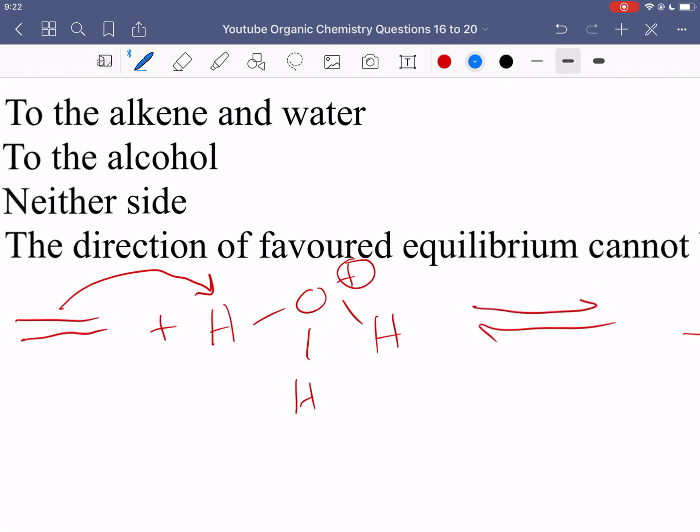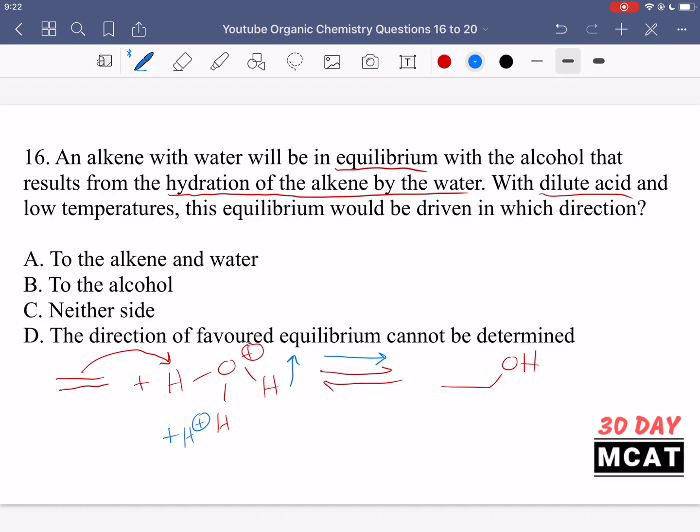Well what happened is we added more H plus over here, which means that we increase the amount of this species, the hydronium. So what we ended up doing is increasing the amount of a reactant. To relieve this stress, according to Le Chatelier's principle, the reaction equilibrium is going to shift to the right. So that means that we're going to get is pushing this reaction towards the side with more alcohol.